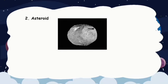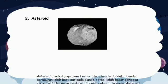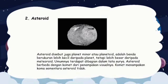2. Asteroid. Asteroid disebut juga planet minor atau planetoid. Adalah benda berukuran lebih kecil daripada planet, tetapi lebih besar daripada meteoroid. Umumnya terdapat di bagian dalam Tata Surya. Asteroid berbeda dengan komet dari penampakan visualnya. Komet menampakkan koma, sementara asteroid tidak.